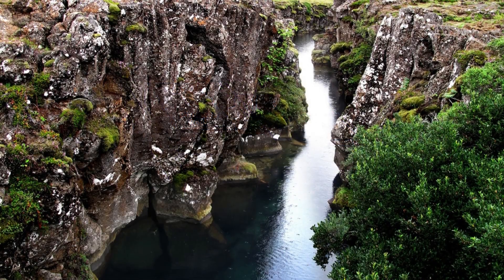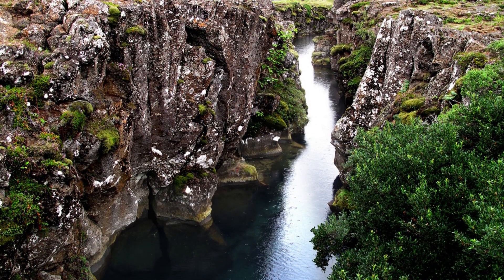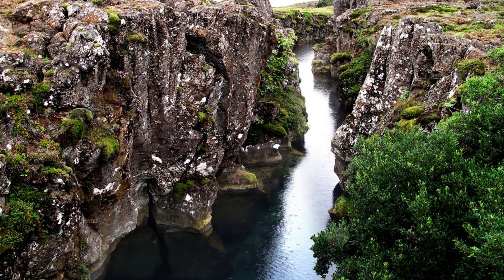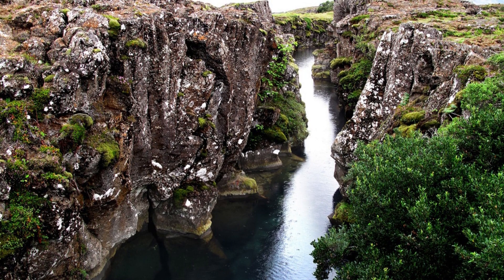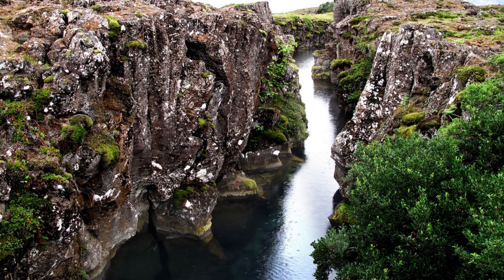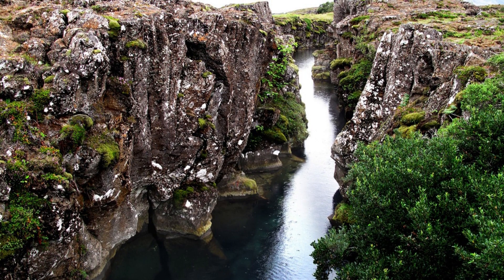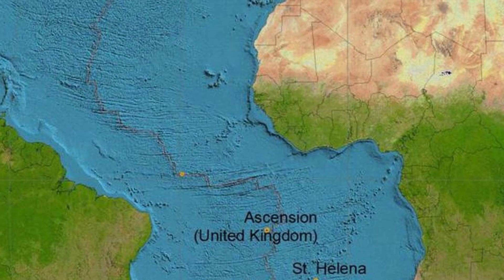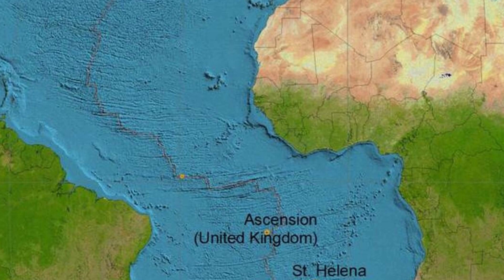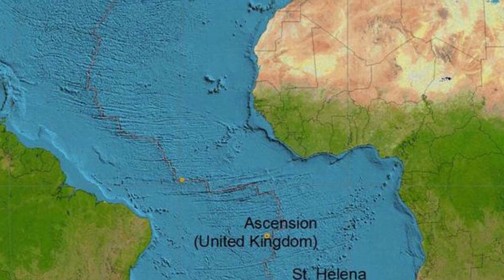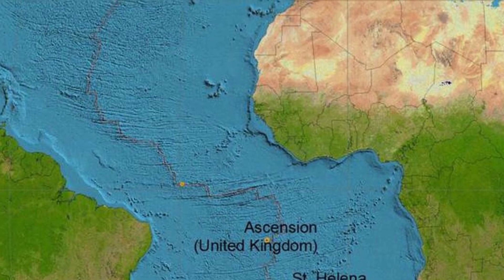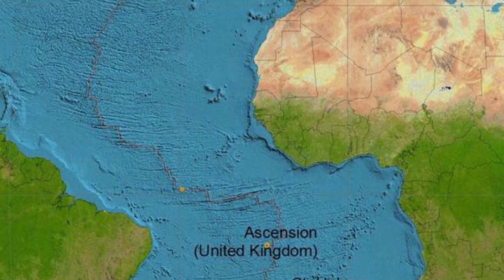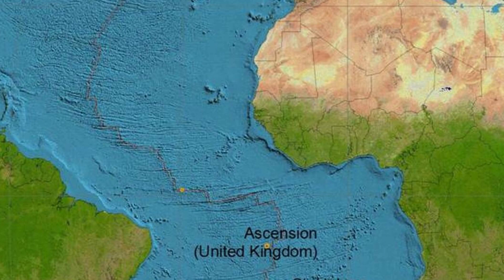Divergent boundaries are where plates move away from each other. This process forms new crust as magma rises from the mantle, creating a gap. One remarkable example of a divergent boundary is the Mid-Atlantic Ridge.